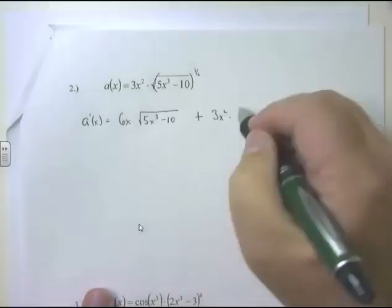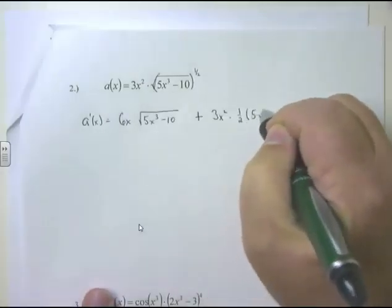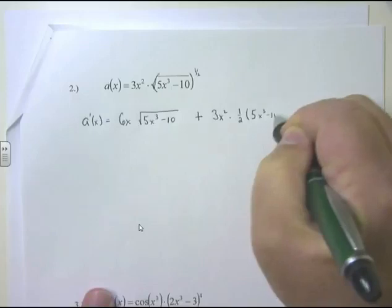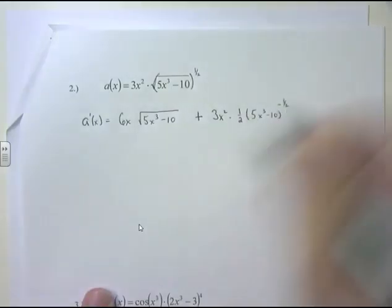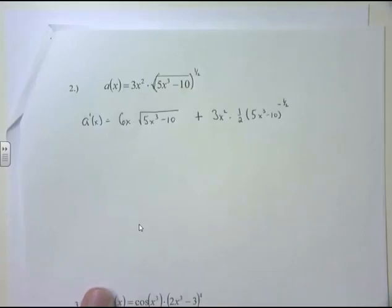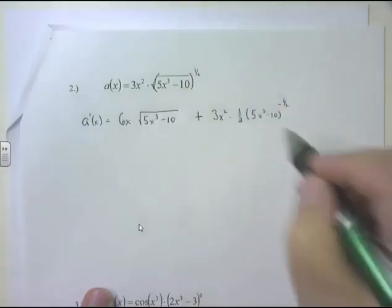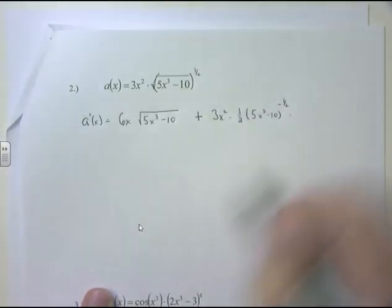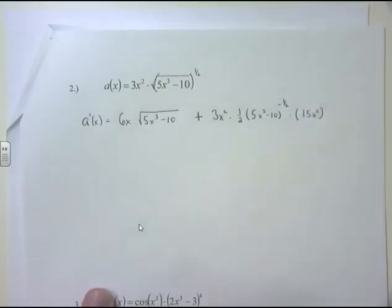Chain rule: derivative of the outside — one half pops out front. The inside, 5x³ - 10, stays the same, raised to the negative one half (since one half minus 1 is negative one half). Times the derivative of the inside, which is 15x². That's the solution.